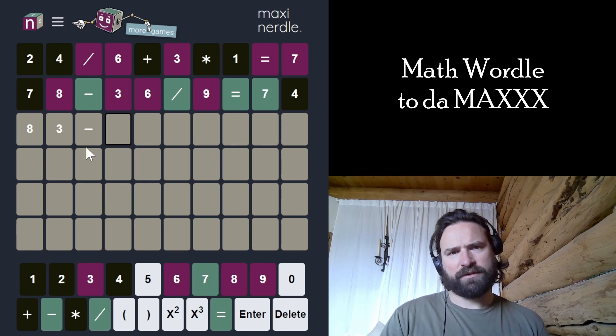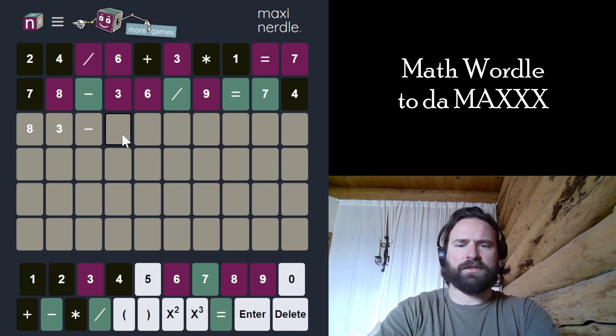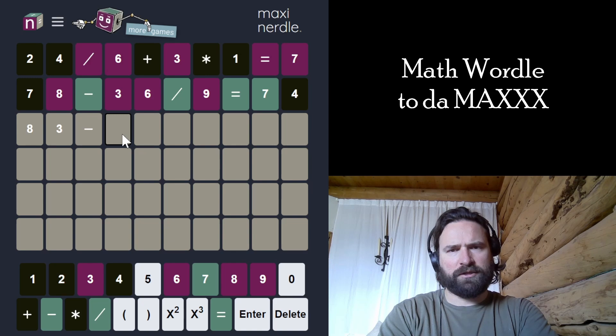I feel like it has to be 90-something. But that makes the number pretty big that we're subtracting. So I don't know if 83 works. I might just get a 0 and a 5 involved.